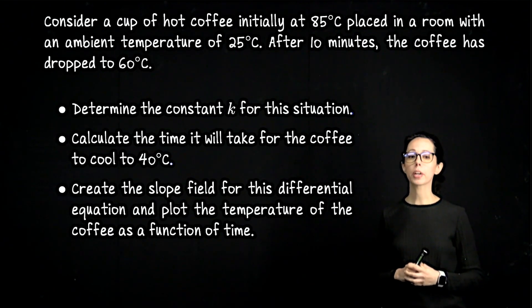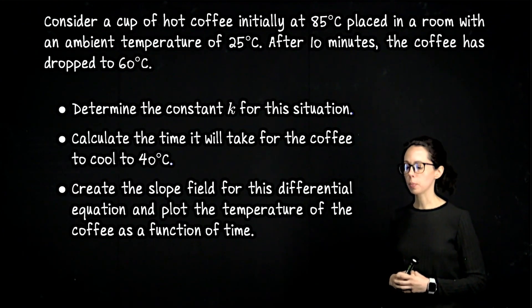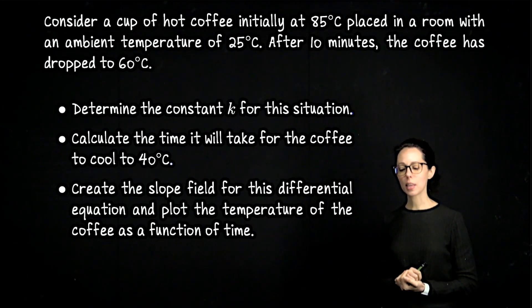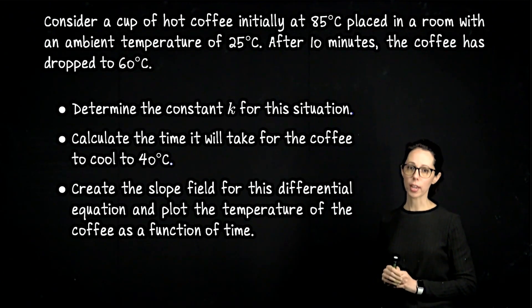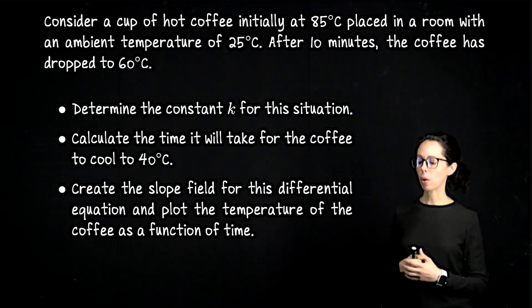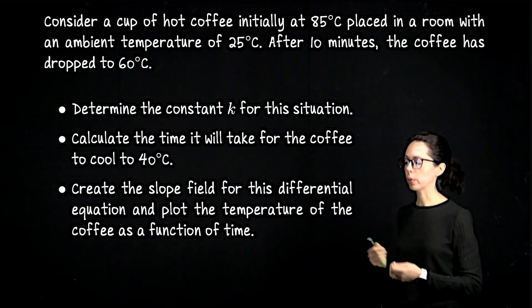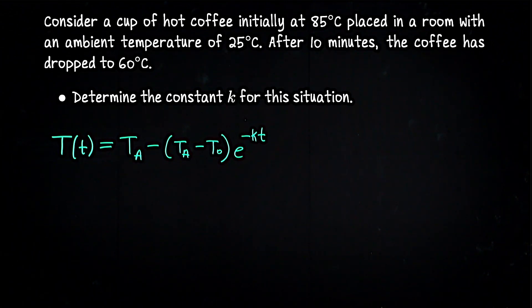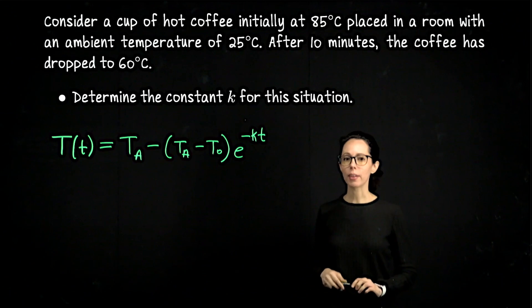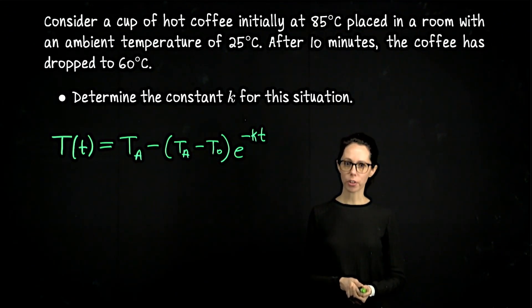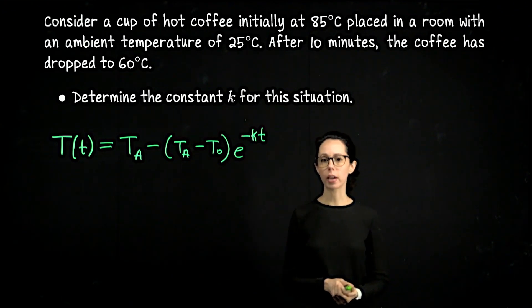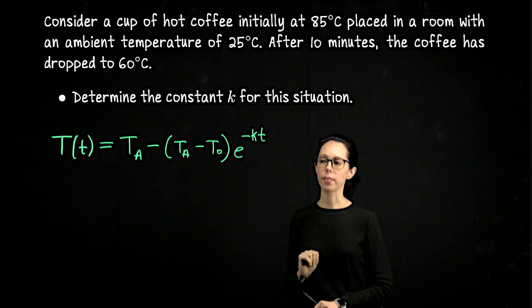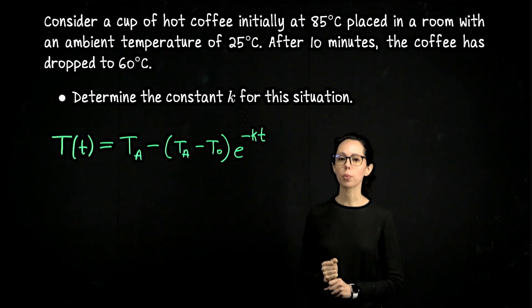Let's start with finding parameter k. As you watch, think about whether you have the same algebra steps in mind, because the rest of this example isn't really about differential equations — we already solved the differential equation using separation of variables and won't do it again. The rest is really about working with exponential functions. If you're a little rusty on exponentials and natural logs, that might be the focus of this example for you.